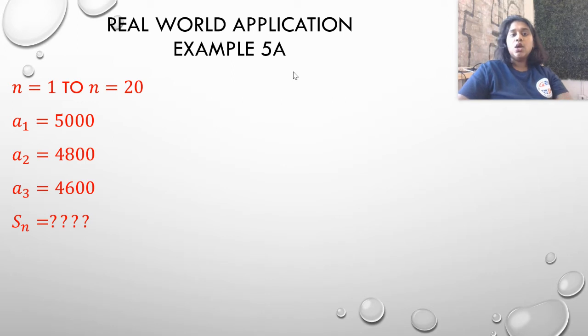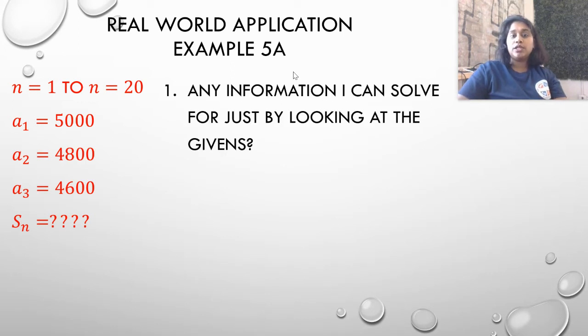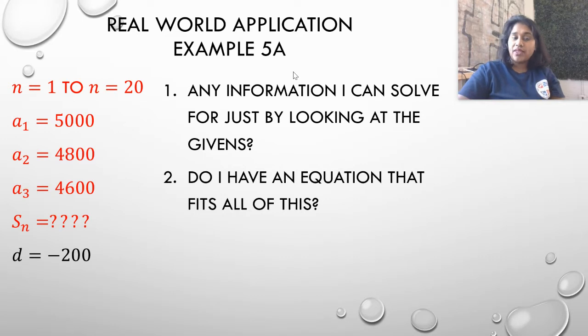So let's plug in what we know. But before we can plug in what we know, first, we have to figure out the given information. Did they give us any hidden information, any information I can solve by just looking at the givens? So looking at the information they gave me, I can immediately figure out that this looks like an arithmetic sequence. So there's a d value, a common difference between each of my terms. And I went ahead and calculated it and figured out that the d value is negative 200.